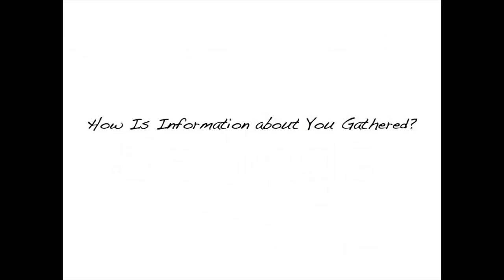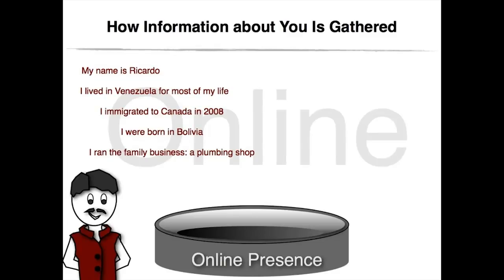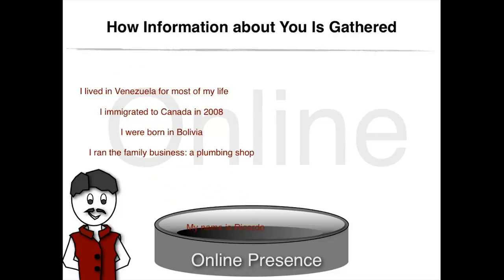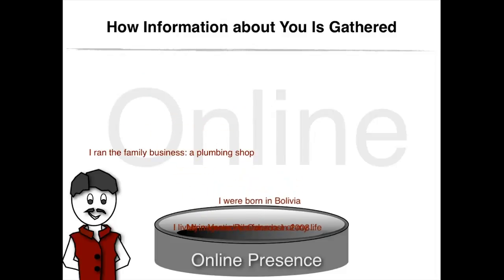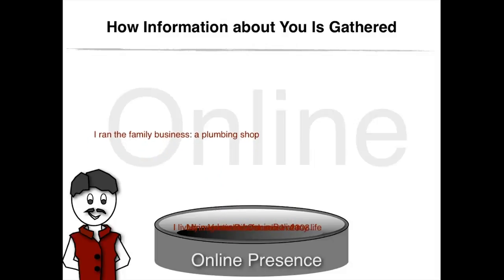Three kinds of information can be gathered about you when you are using social network sites: information that you shared, information that others shared about you, and information that was gathered through electronic tracking. On one hand, you intentionally shared your biographical information, which includes and is not limited to your name, gender, age, education, employment history, hometown, places that you visited, and more. You also shared photos, videos, contacts, interests, moods, status updates, and more.